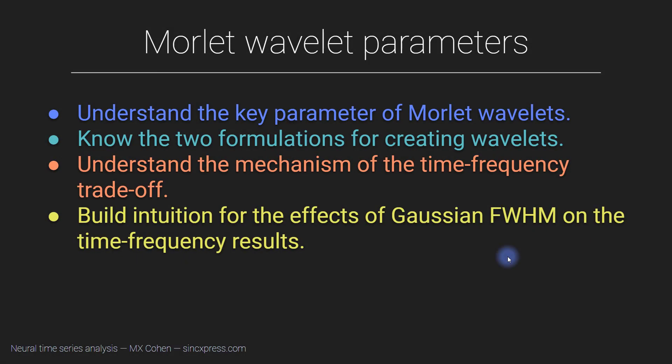A Morley Wavelet takes two key parameters. One of those parameters is the frequency of the sine wave used to create the wavelet, which we've already discussed. The other key parameter is the main focus of this video — the parameter that defines the tradeoff between temporal precision and frequency precision. This parameter has a few different terms: the shape of the Gaussian, the width of the Gaussian, the full width at half maximum, or the number of cycles.